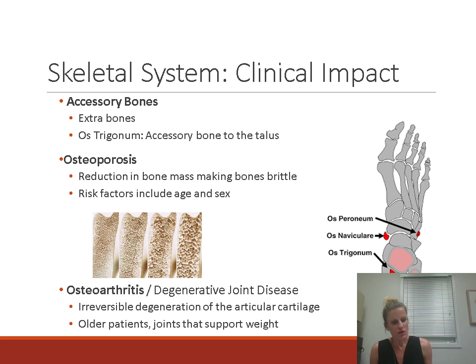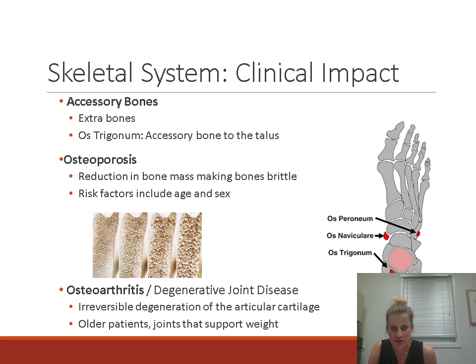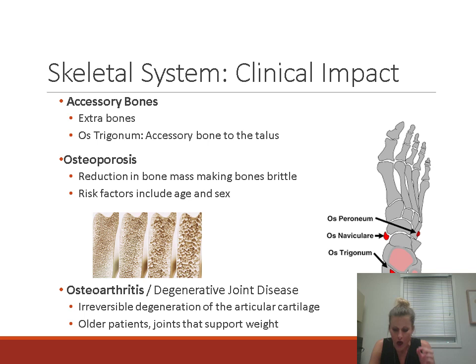Some clinical implications of the skeletal system: accessory bones are extra bones not normally part of the skeleton, but found in a relatively large percentage of people. The foot is the most common place — the os trigonum on the talus is the most common accessory bone. The biggest problem with accessory bones is pain; if pain is intractable, we can remove the bone surgically; otherwise, no problem.